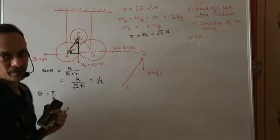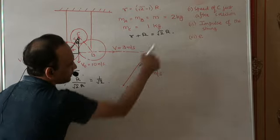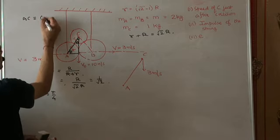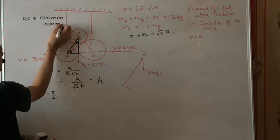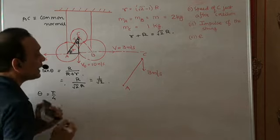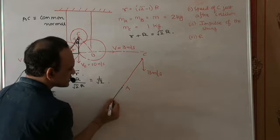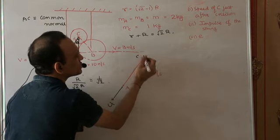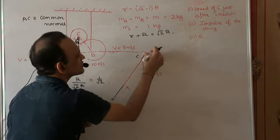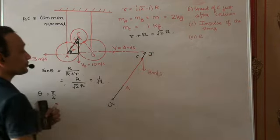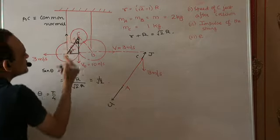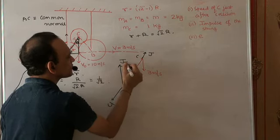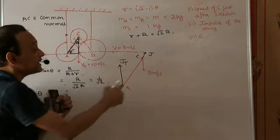When C impacts A, the line joining the centers is the common normal — A–C is the common normal. C will exert on A an impulse J in the direction along that common normal. By Newton's third law, A will exert on C an impulse J in the opposite direction, which appears in the free body diagram of C. The string will exert on A an upward impulse JT, preventing A from moving downwards.